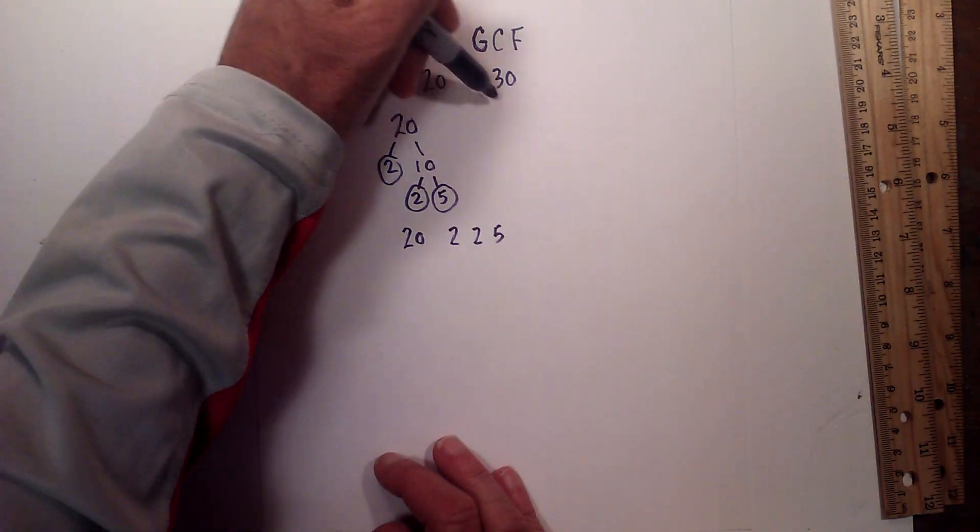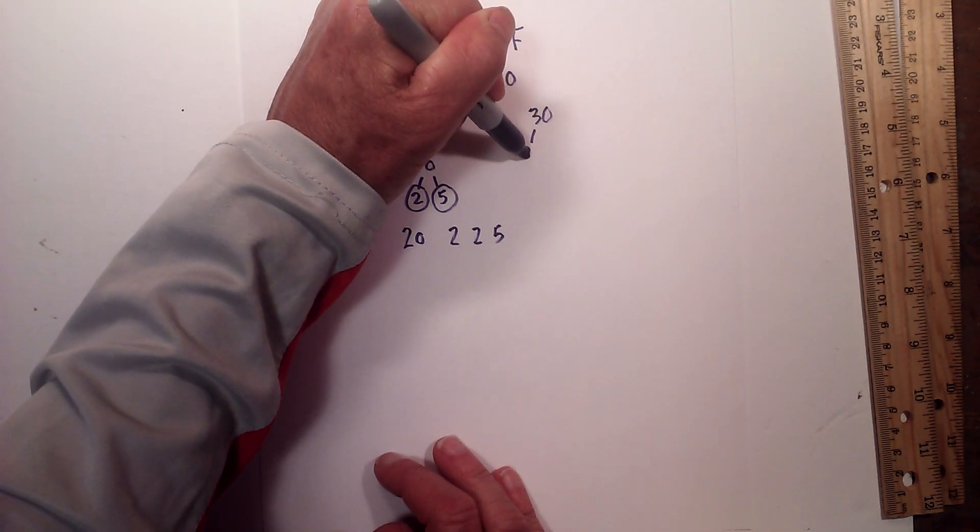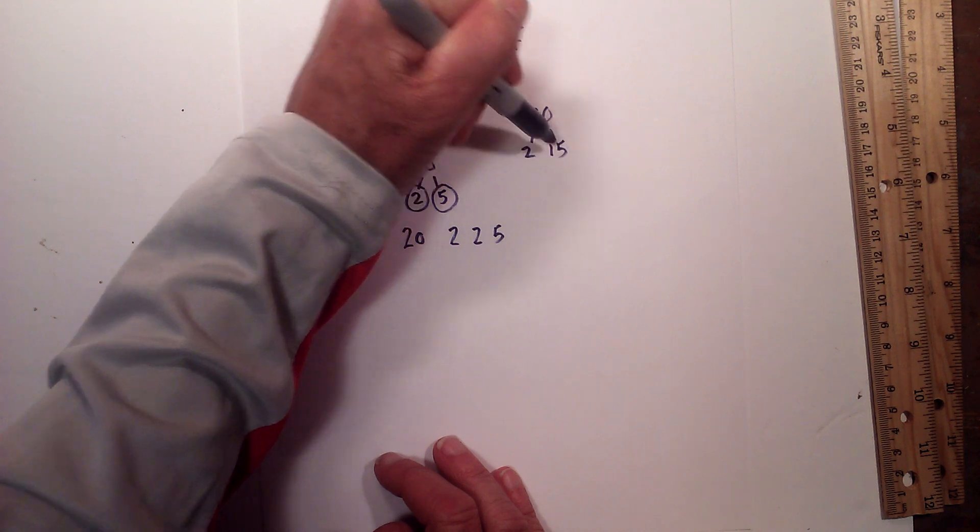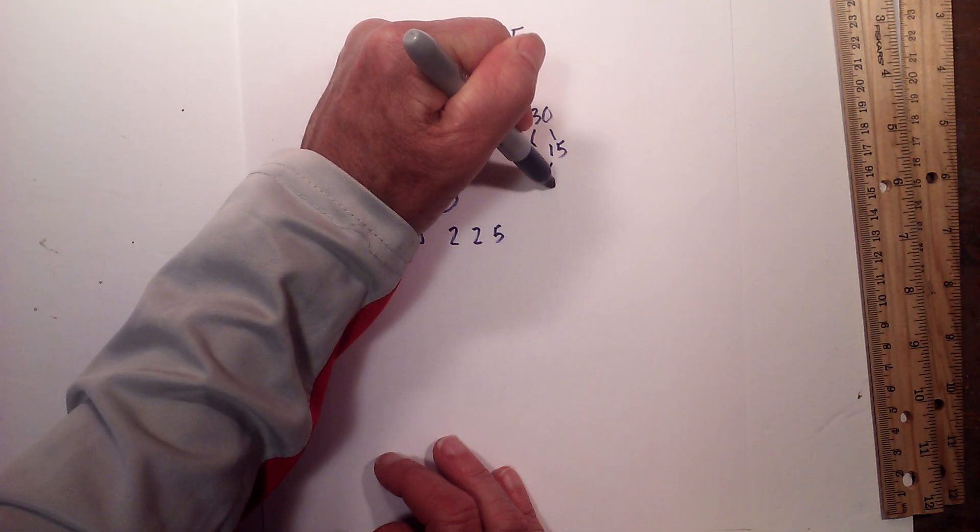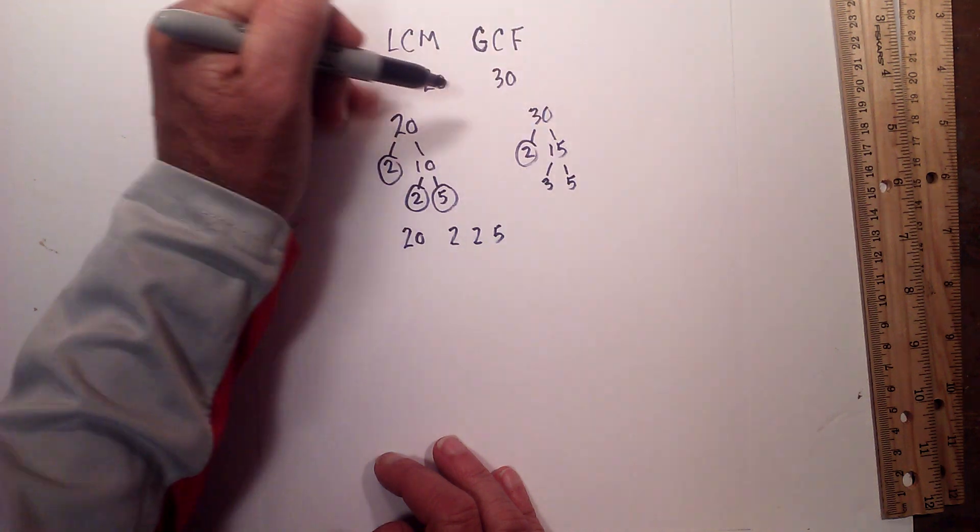Now let's complete a factor tree for 30. We have 2 times 15. Circle the 2 because it is prime. Now 3 times 5 equals 15.